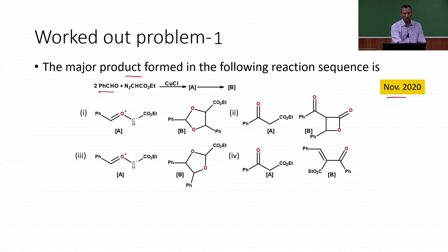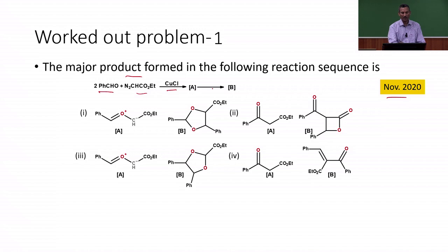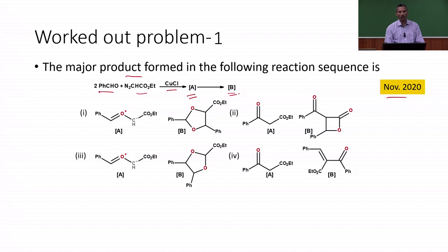Here we have benzaldehyde and ethyl diazoacetate. These two compounds undergo reaction in the presence of copper chloride to give an intermediate A, which further undergoes some reaction to give product B. We are going to find out what is intermediate A and what is product B.